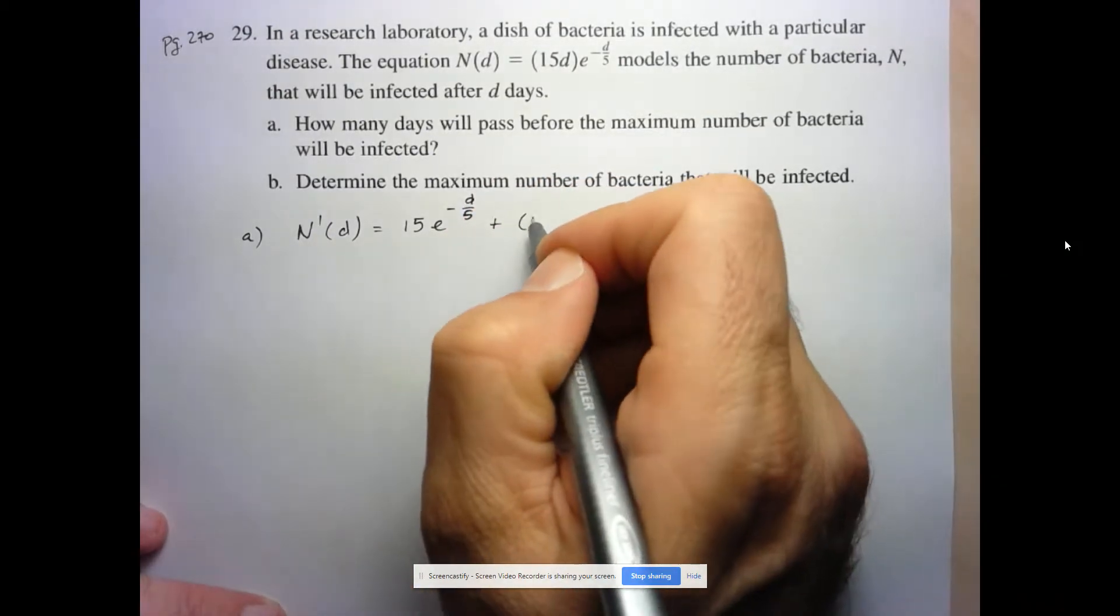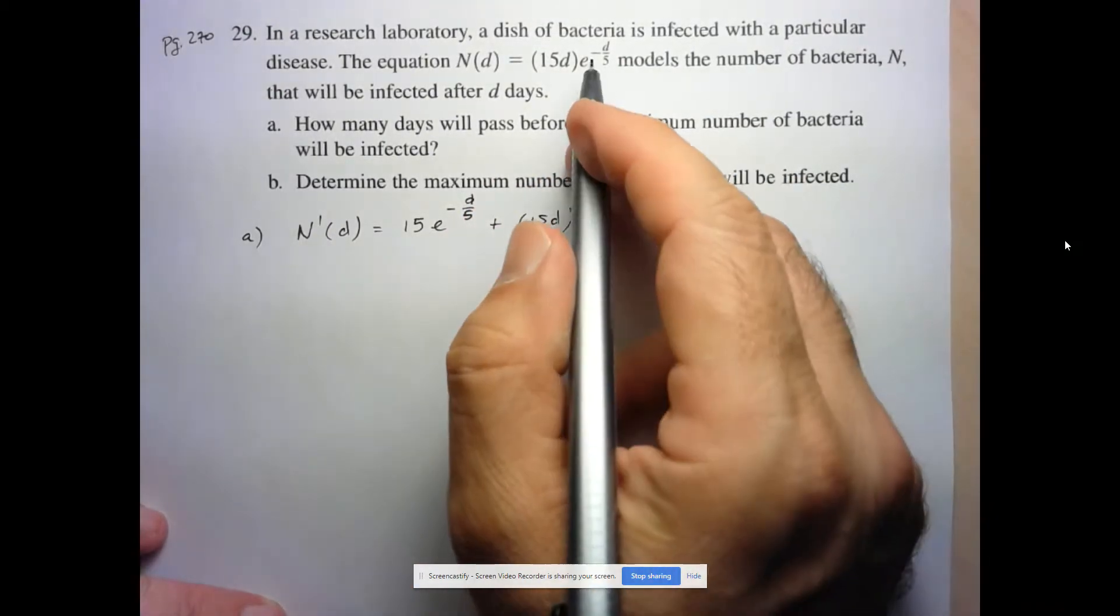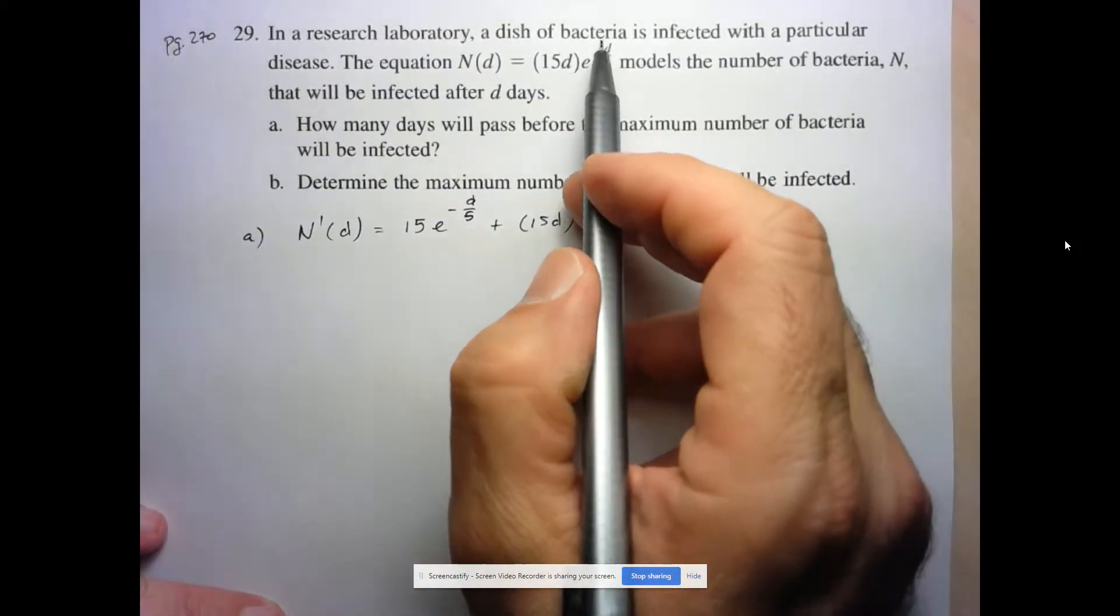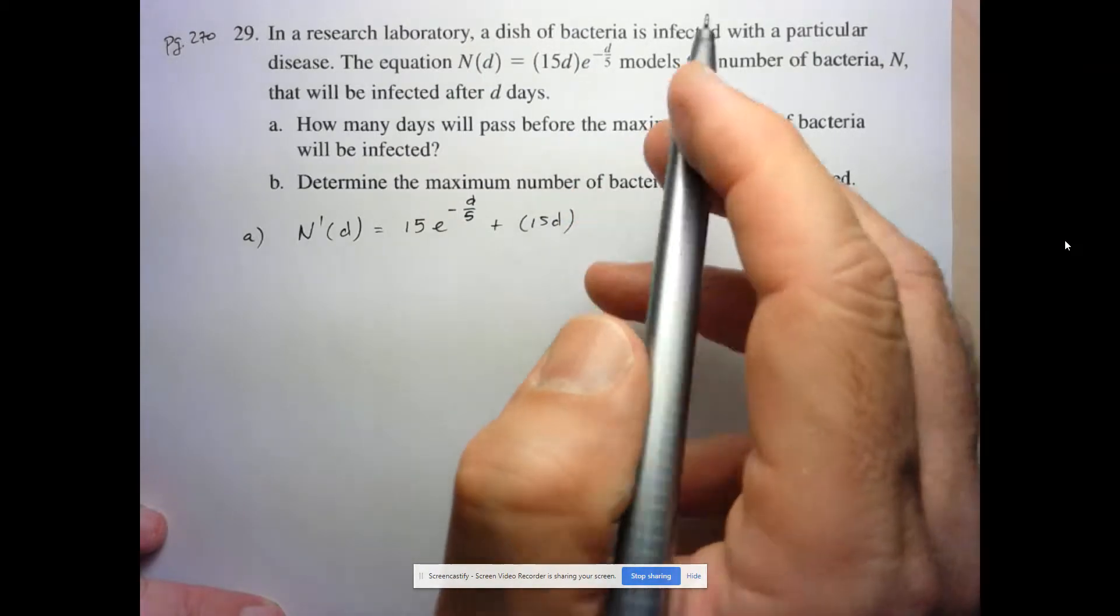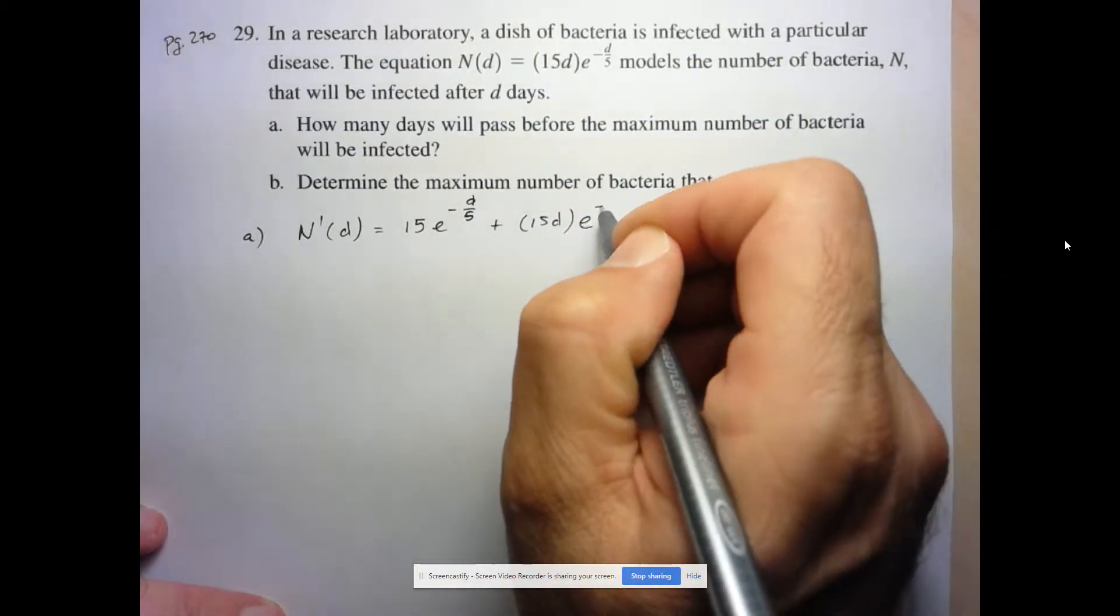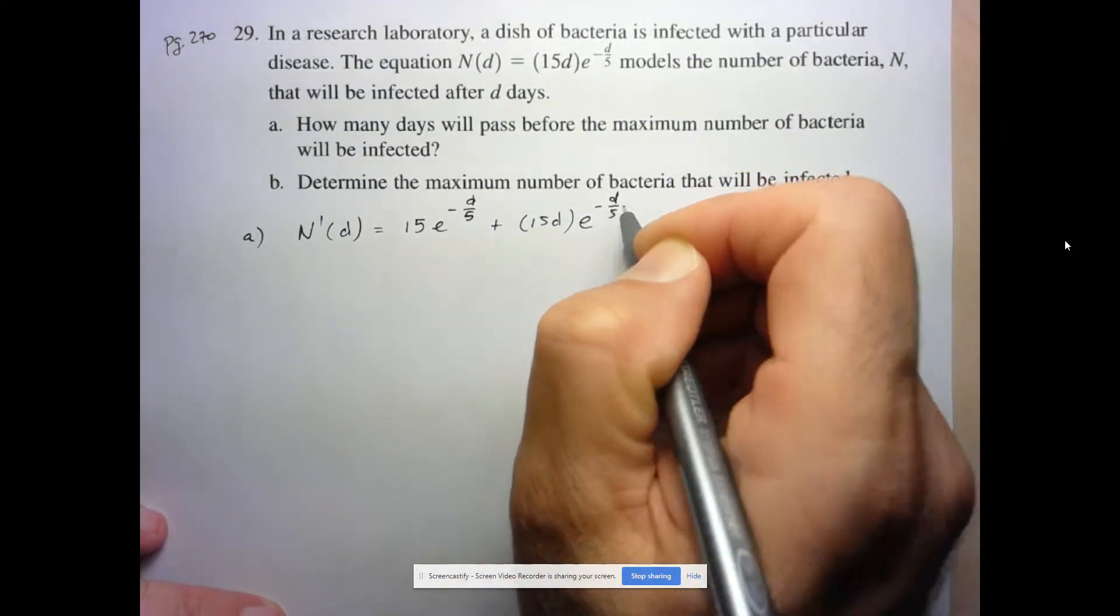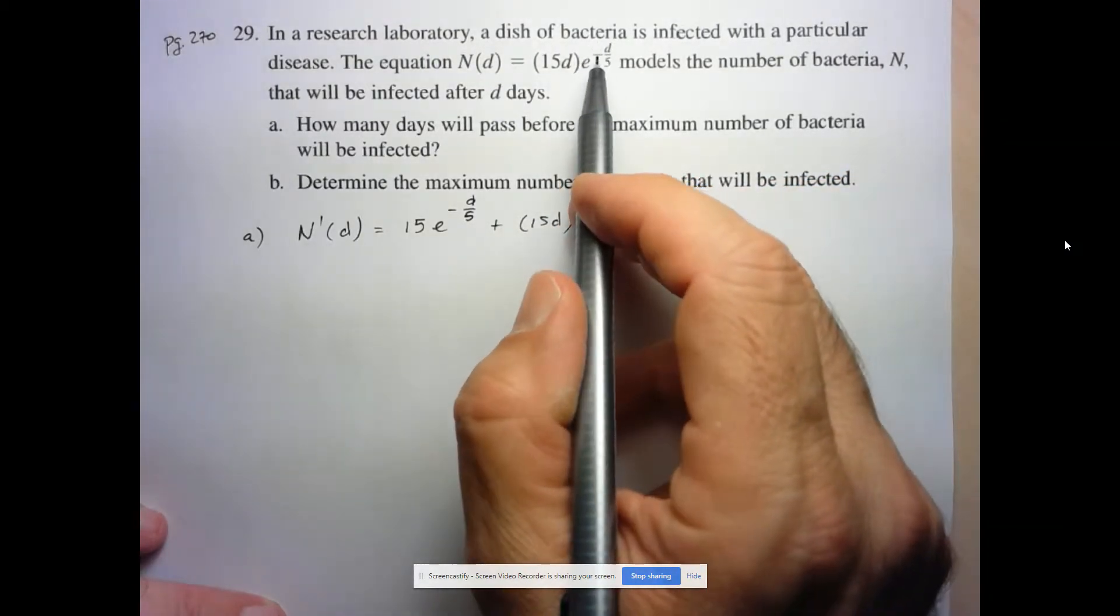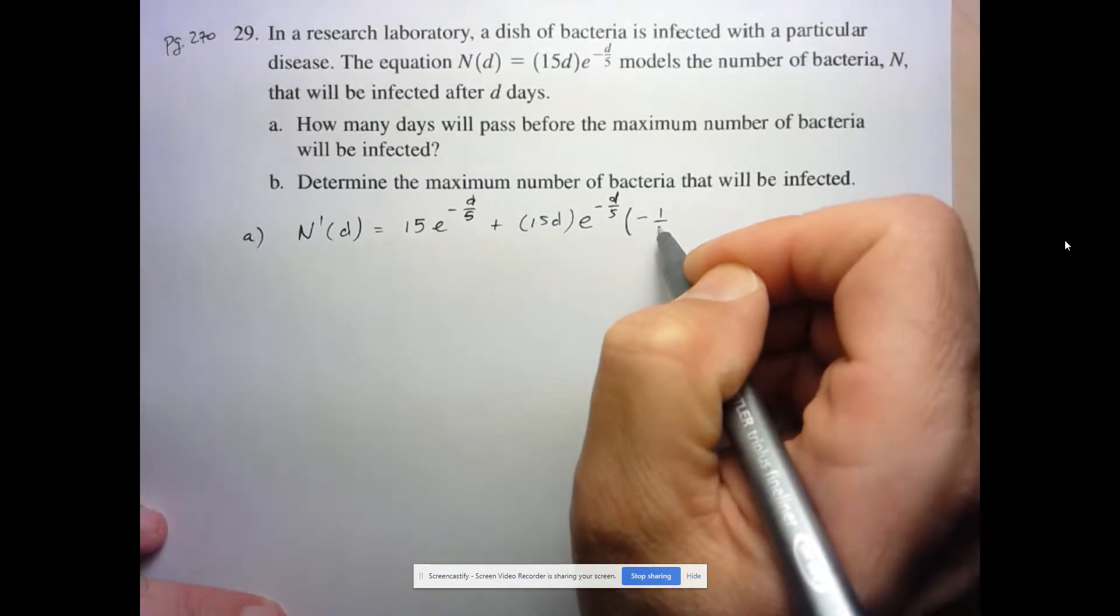Derivative of the first function is 15 times the second function, E to the negative D over 5, plus the first function, 15D, times the derivative of the second function. We're going to have to use a chain rule there. So this will be like our U value. Derivative of E to the U is E to the U, so E to the negative D over 5 times the derivative of negative D over 5. Well, that's just negative 1 fifth.